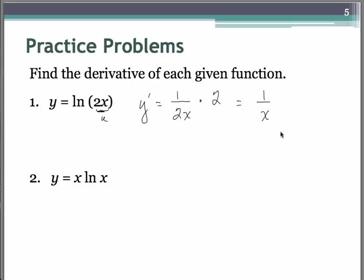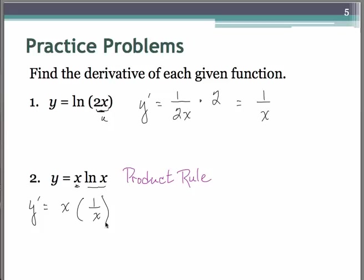The second one is going to require the product rule. So we'll keep the x multiplied by the derivative of natural log of x, so that's going to be 1 over x. Plus, we'll keep the natural log of x multiplied by the derivative of the plain x, so that's just going to be 1. So in the end we have x times 1 over x — that's 1 — plus natural log of x.